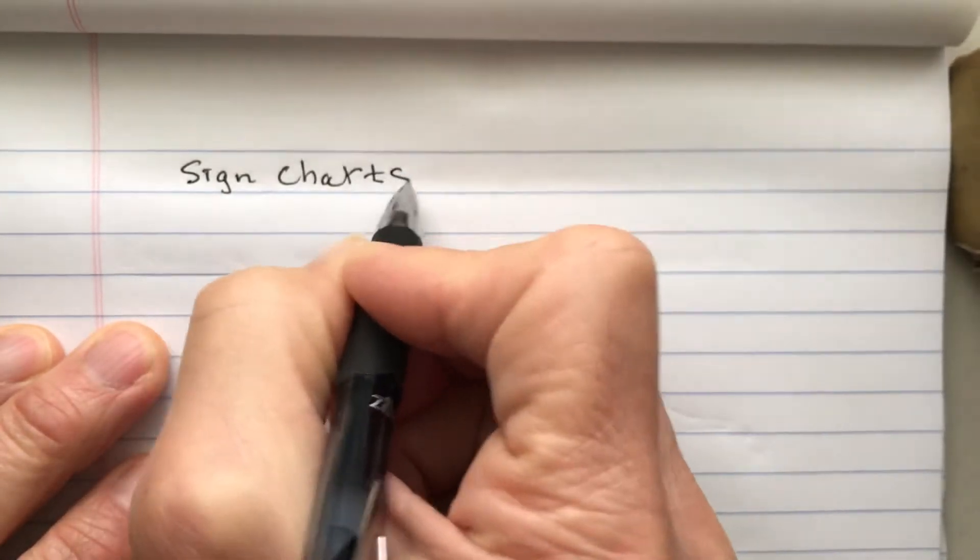Now we're going to talk about sign charts. So sign means positive and negative. It doesn't mean like cosine and sine.